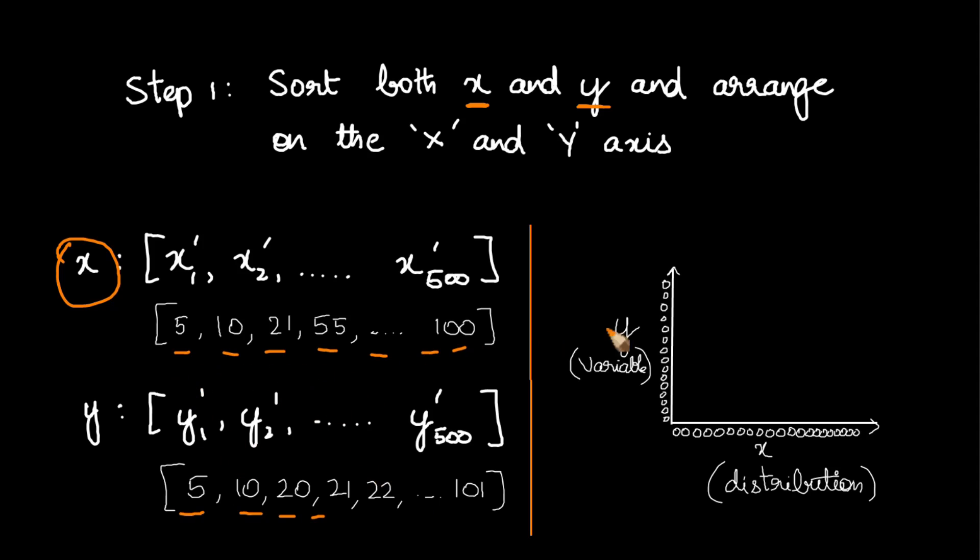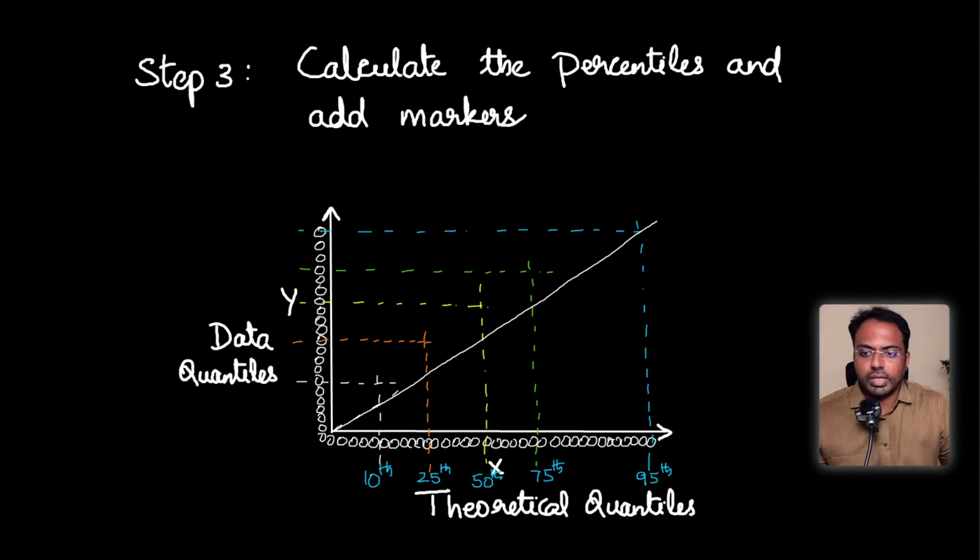Now, this data, we are arranging them in the x axis and y axis. So these are the different data points, all the dots in the bottom and the vertical lines, we arrange them in the x and the y axis.